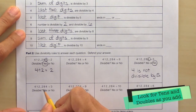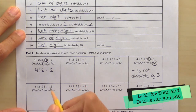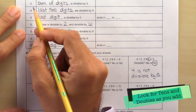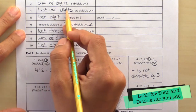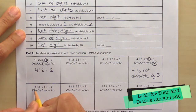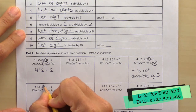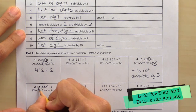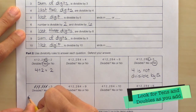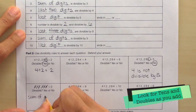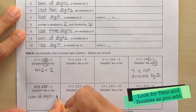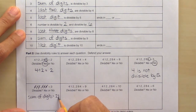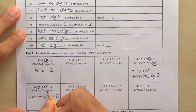One more example: 412,284 divided by 3 — is it divisible, yes or no? The divisibility rule for dividing by 3 is: check if the sum of the digits is divisible by 3. Let's add up the digits: 4+1+2+2+8+4 — we get 8+2=10, plus 4 is 14, plus 4 is 18, plus 1 is 19, plus 2 is 21. The sum of the digits equals 21. Is 21 divisible by 3? Yes, so the entire number is divisible by 3.